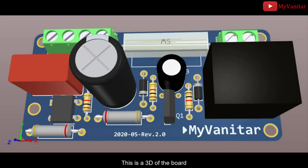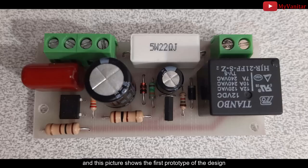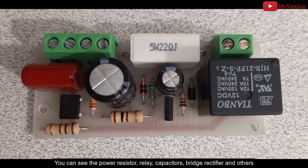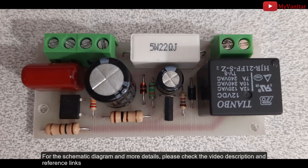is my favorite CAD software, so I used the SamacSys Altium plugin to install the libraries. This is the 3D view of the board, and this picture shows the first prototype of the design. You can see the power resistor, relay, capacitors, rectifiers, and others. For the schematic diagram and more details, please check the video description and reference links.